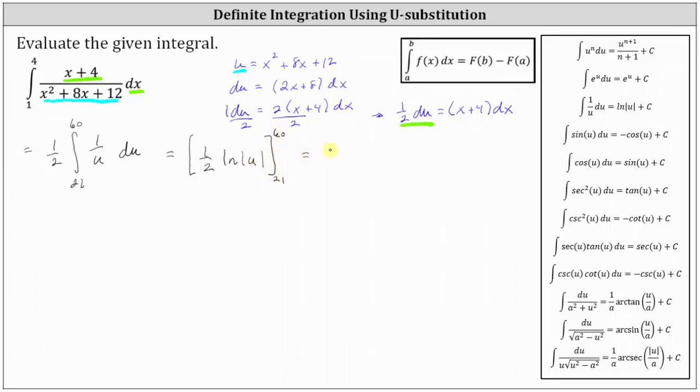Let's go ahead and factor out the 1 half. We can actually drop the absolute value since 60 and 21 are both positive. But it's not wrong to leave the absolute value.